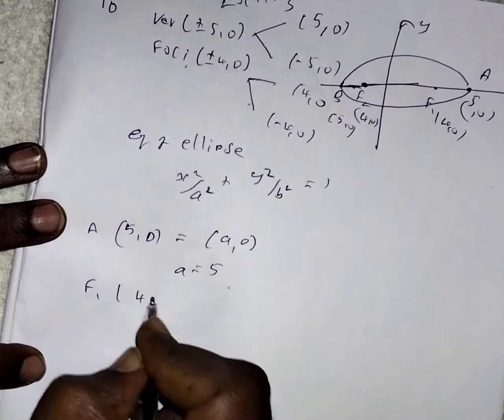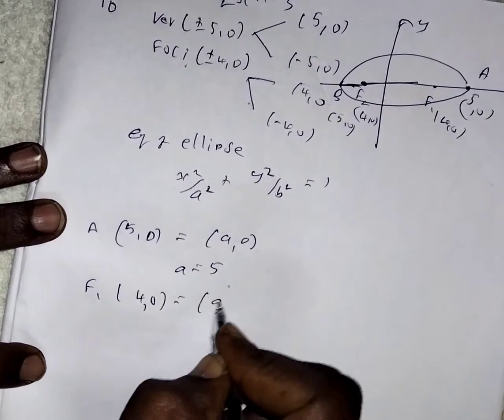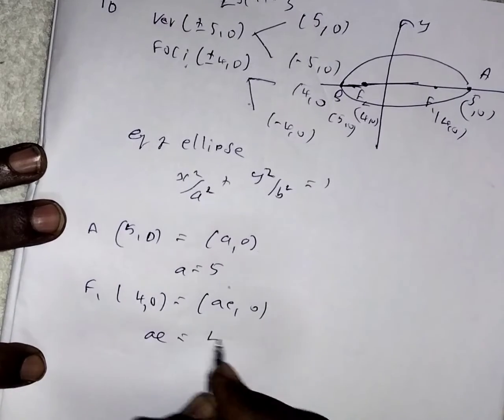If you take focus 1 at 4 comma 0, that is equal to AE comma 0. So AE value is 4.